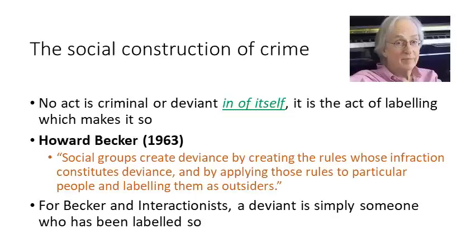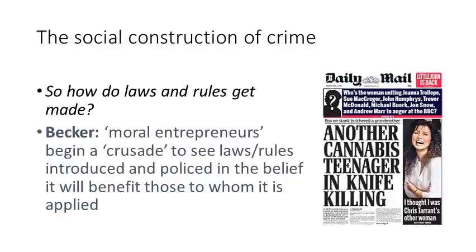Here we begin with the work of Howard Becker, who argued that social groups create deviance by creating the rules whose infraction — that is, breaking — constitutes deviance, and by applying those rules to particular people and labelling them as outsiders as a result of this behaviour. For Becker and interactionists, a deviant is simply someone who has been labelled as such.